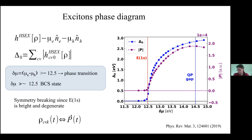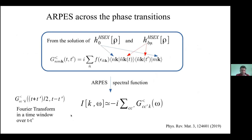One way to look at this state is to study the time-resolved ARPES signature. Formally, one can construct the ARPES signature from the G-lesser Green's function. Within this procedure, the G-lesser can be constructed from the eigenstates of the equilibrium Hamiltonian and the eigenstates of this non-equilibrium Hamiltonian. One can then construct the G-lesser and via Fourier transform with respect to the relative time coordinates obtain the ARPES signal.